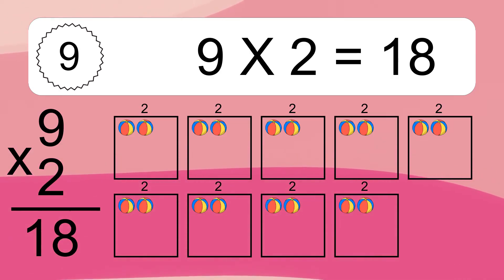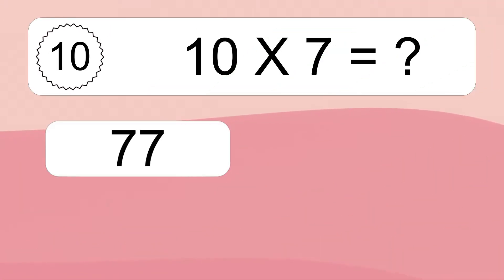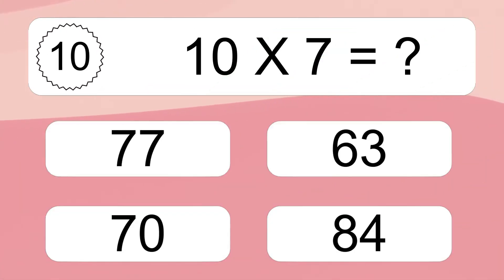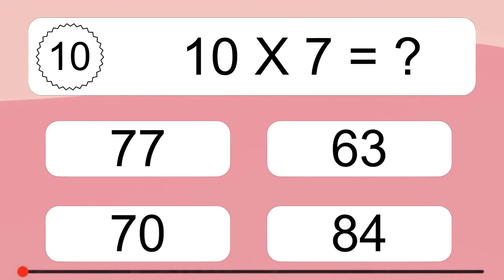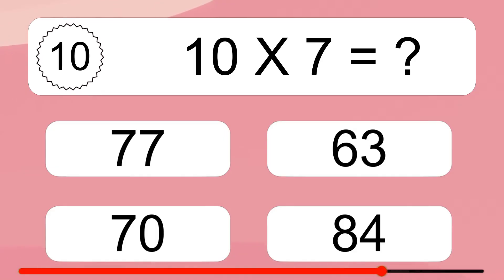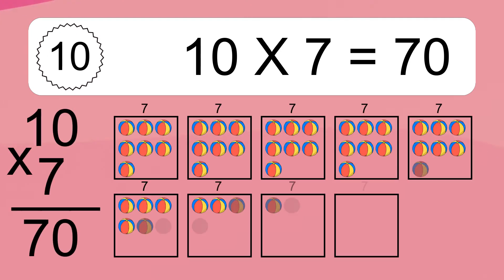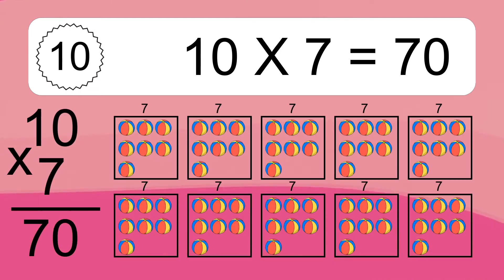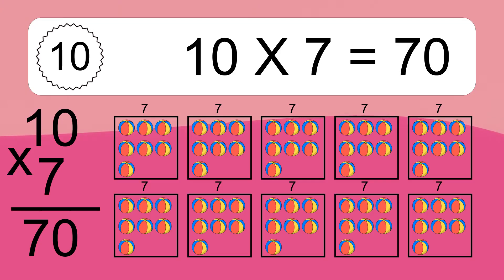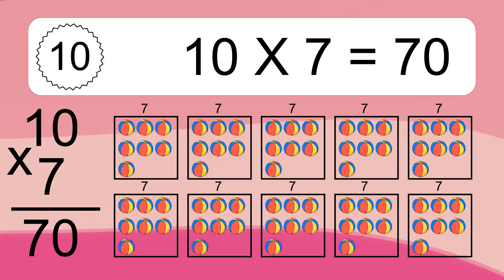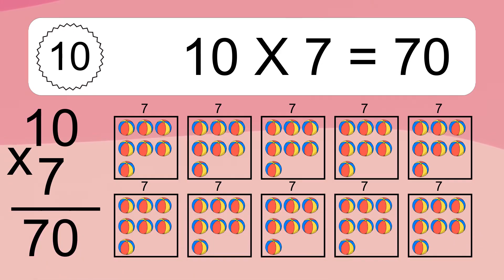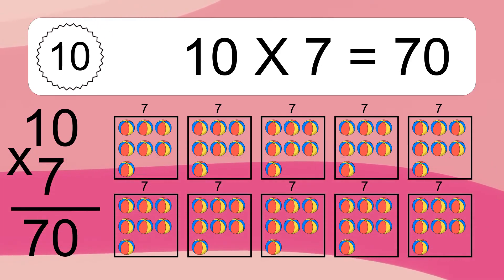10 times 7 equals what? 10 times 7 equals 70. We have 10 boxes, and each box has 7 colorful balls inside. If you count all the balls in all the boxes together, you will have 10 times 7 balls. This equals 70 balls.